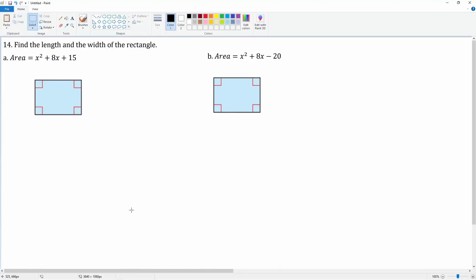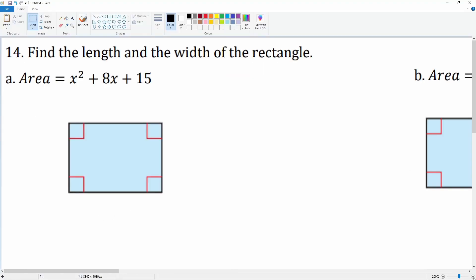Number 4 asks us to find the length and the width of this rectangle. You know that the area is defined by the quadratic equation x² + 8x + 15.